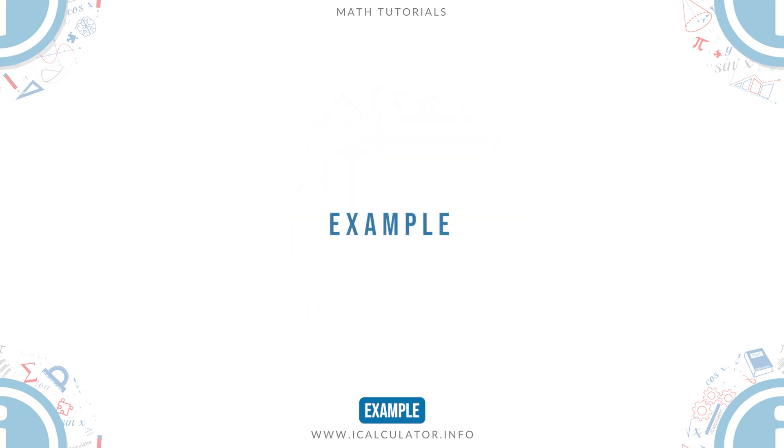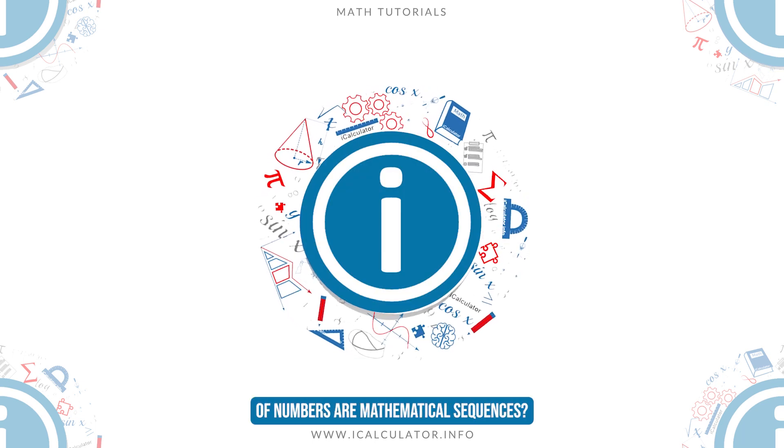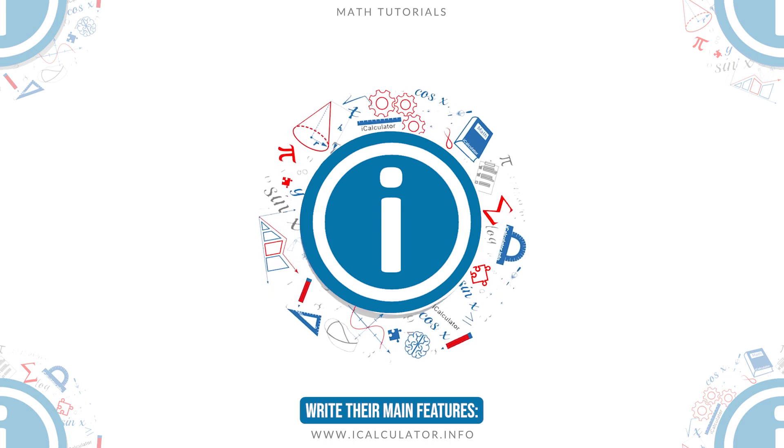Example: Which of the following lists of numbers are mathematical sequences? Write their main features.